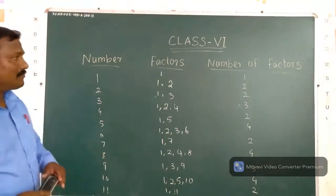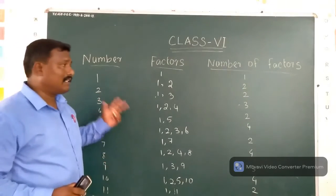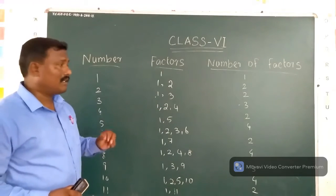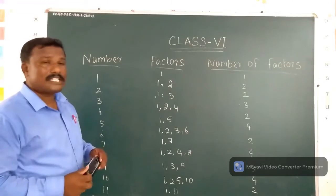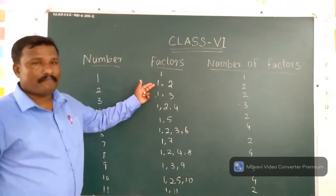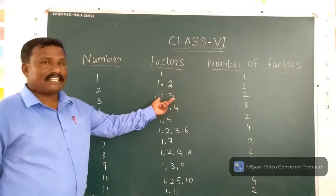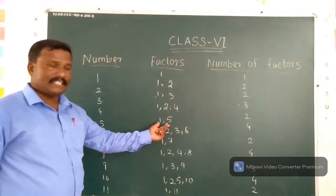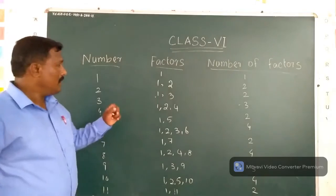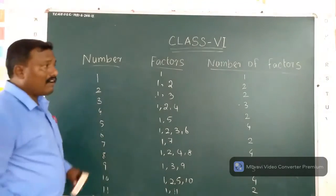Now we want to discuss what is a prime number and what is a composite number. We already know what is a factor and what is a multiple. A prime number means a number that has only two factors. For example, 2 has only two factors, 3 has only two factors, 5 has only two factors, 7 has only two factors, 11 has only two factors. So 2, 3, 5, 7, 11 are all prime numbers.